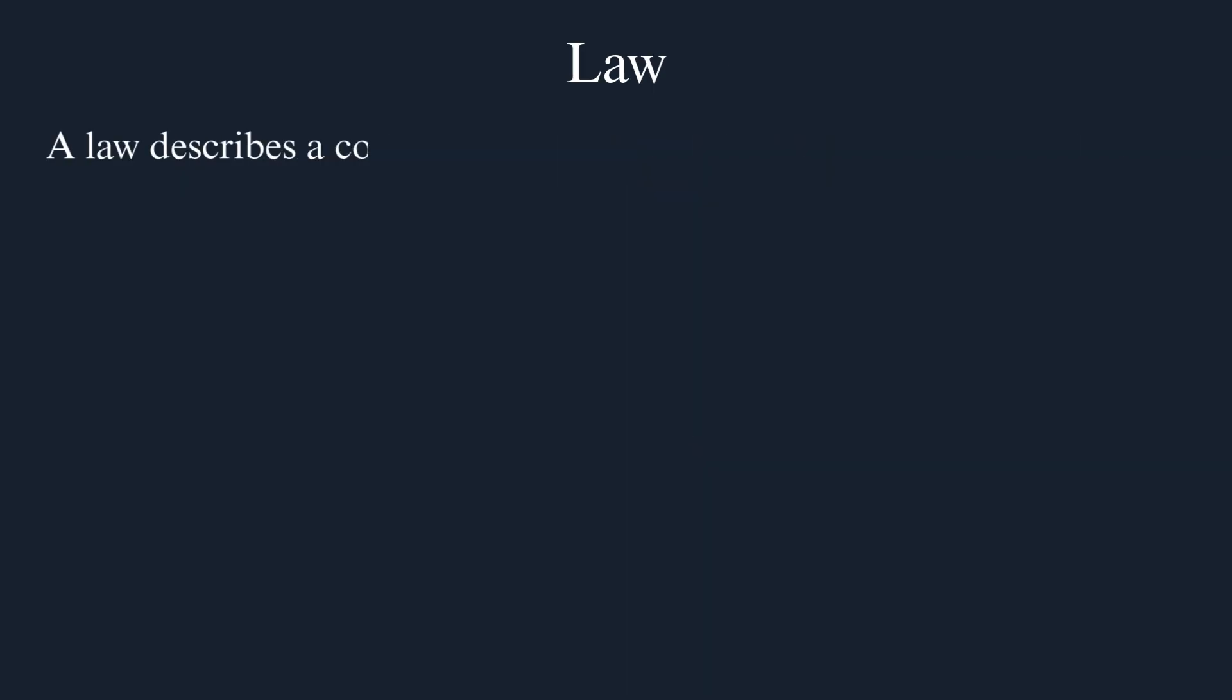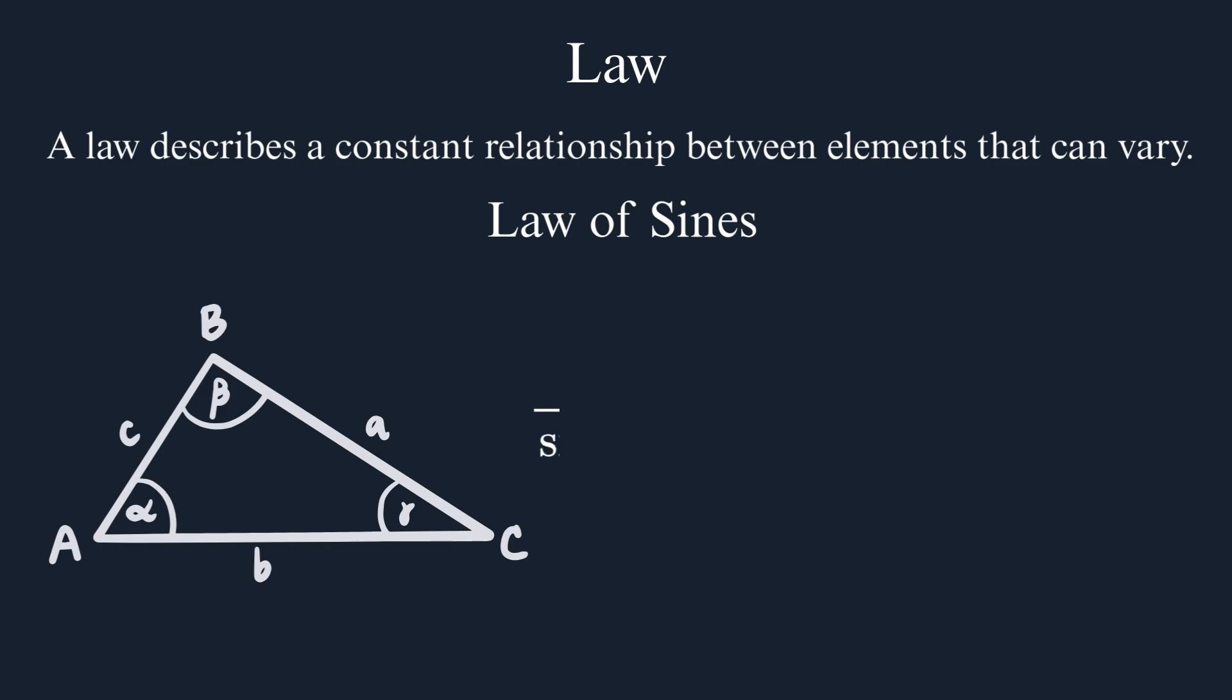Law. A law describes a constant relationship between elements that can vary. Consider the law of sines as a perfect example. In any triangle, if you take any side and divide it by the sine of its opposite angle, this ratio will always equal twice the radius of the triangle's circumscribed circle. We have elements that vary: sides change, angles change, even the radius changes, but this relationship remains perfectly constant. That consistency defines a mathematical law.